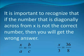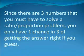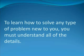It is important to recognize that if the number that is diagonally across from X is not the correct number, then you will get the wrong answer. Since there are three numbers that you must have to solve a ratio proportion problem, you only have a one chance in three of getting the answer right if you guess.